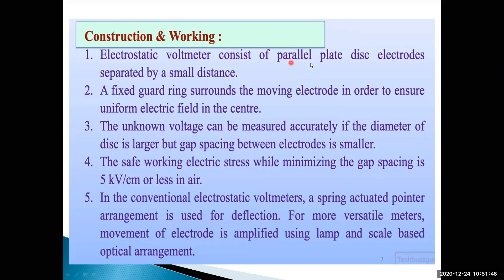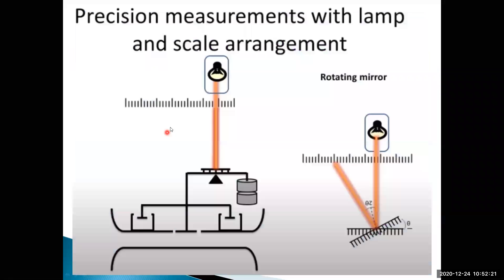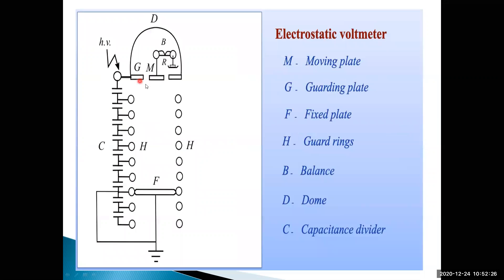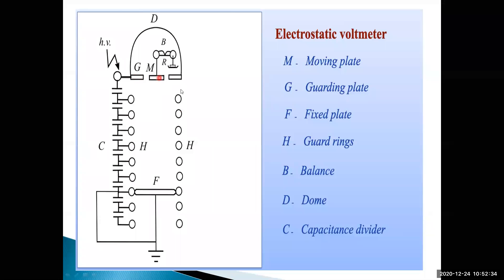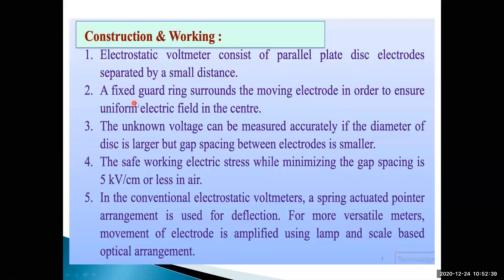Construction and working of electrostatic voltmeter: first, electrostatic voltmeter consists of parallel plate disk electrodes separated by a small distance. Second, a fixed guard ring surrounds the moving electrode in order to ensure uniform electric field in the center. The guard ring is around the moving plate to ensure uniform electric field, and it helps avoid the effect of external stray magnetic fields.